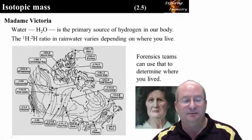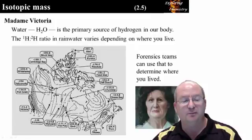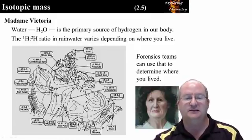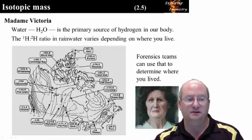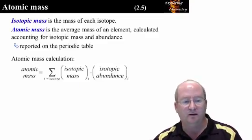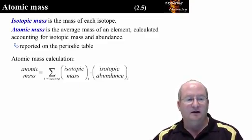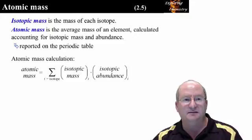This same type of isotopic analysis is used to determine the origin of plant-based drugs seized from smugglers. Isotopic mass is the mass of individual isotopes. However, the periodic table reports the average of the isotopic masses, which is called the atomic mass. The calculation of atomic mass from the isotopic mass is presented here.